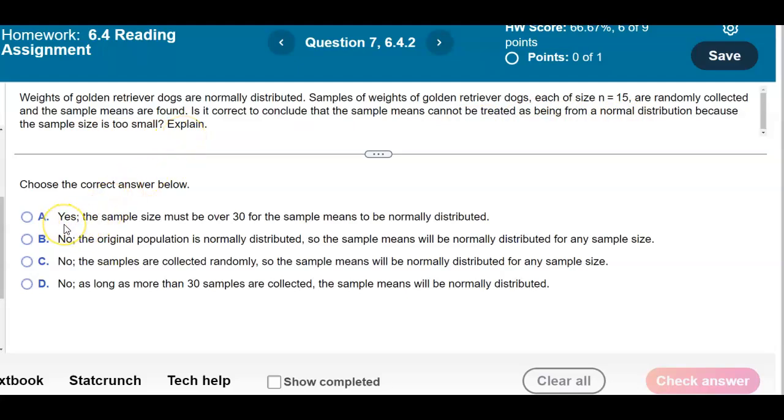A: Yes, the sample size must be over 30 for the sample means to be normally distributed. B: No, the original population is normally distributed, so the sample means will be normally distributed for any sample size. C: No, the samples are collected randomly, so the sample means will be normally distributed for any sample size. D: No, as long as more than 30 samples are collected, the sample means will be normally distributed.